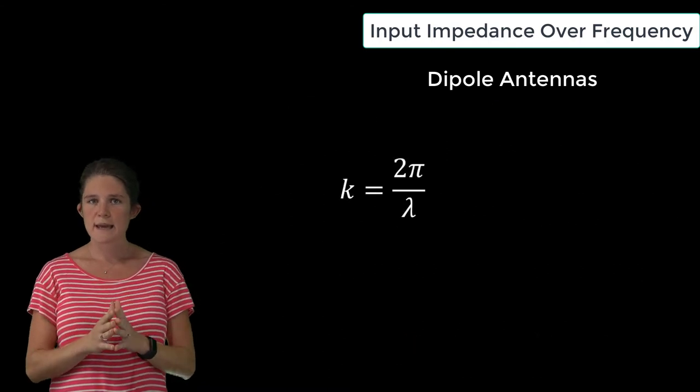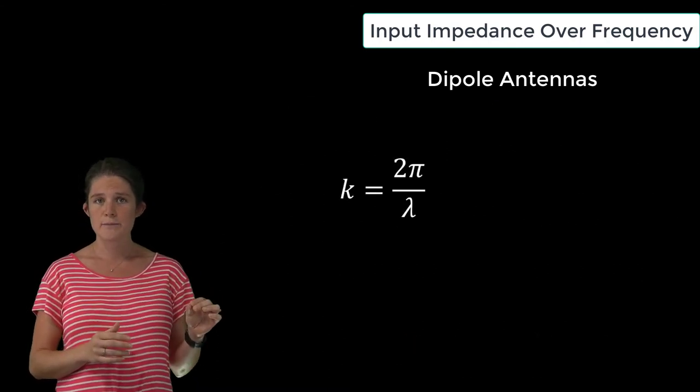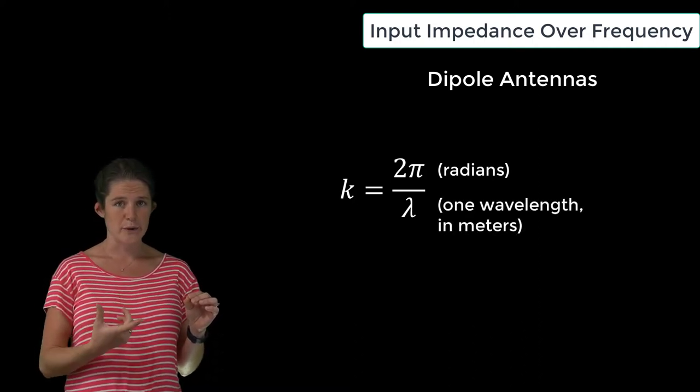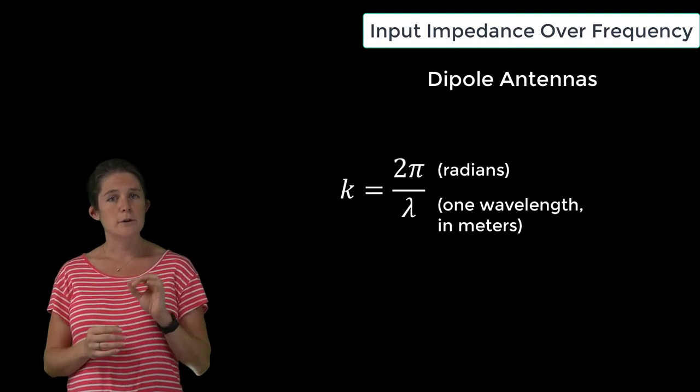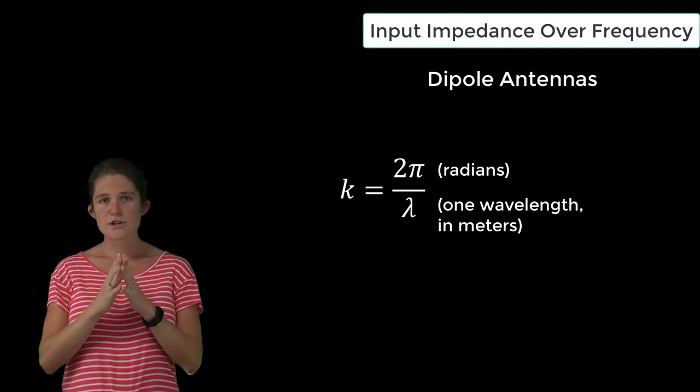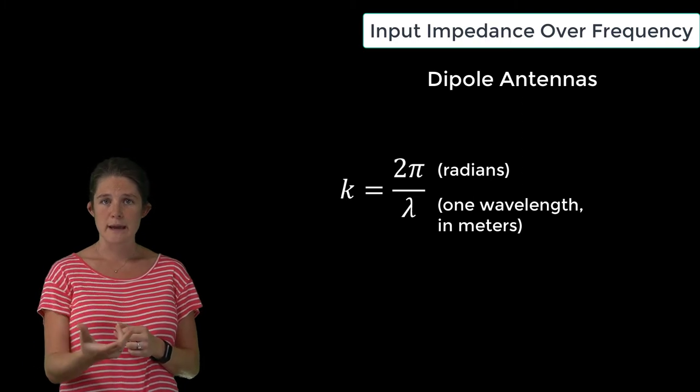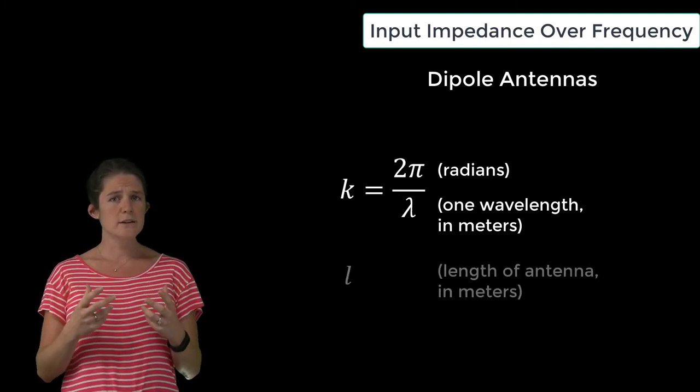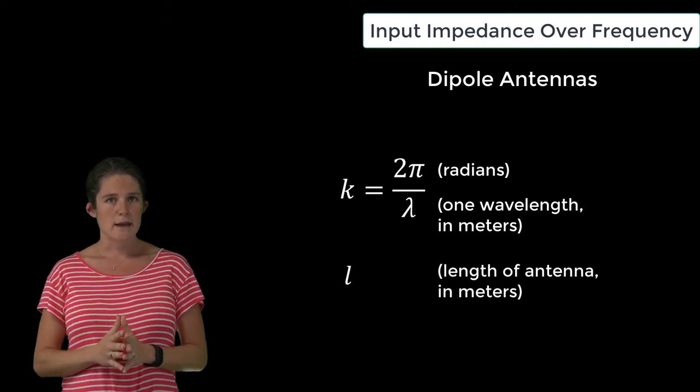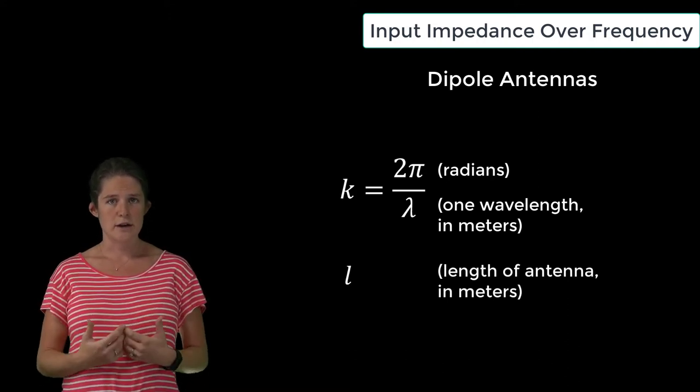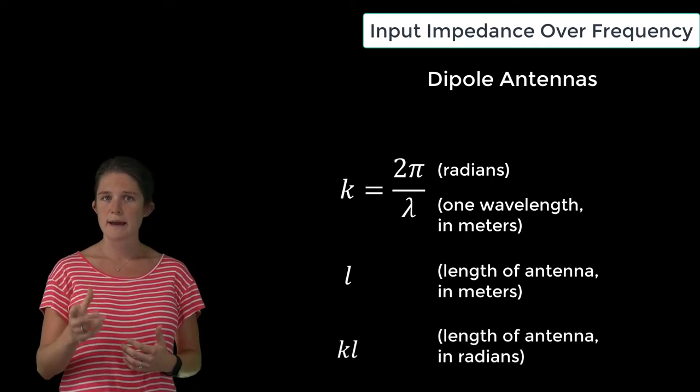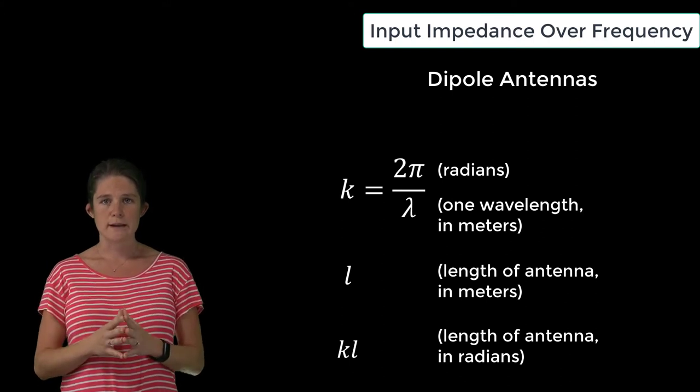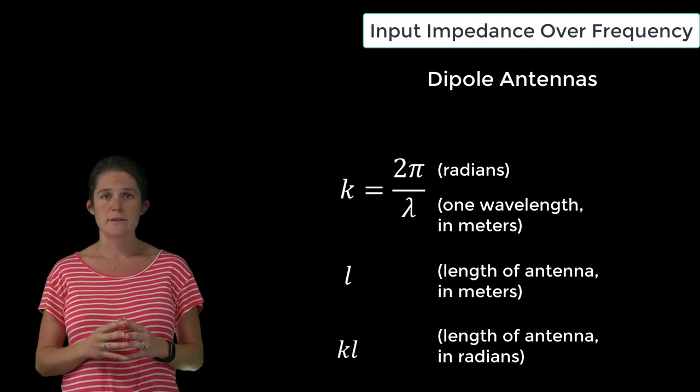Now, we said that k is equal to 2π, which is the number of radians in a wavelength, divided by λ, which is the wavelength. So you can think of k as a conversion factor. You aren't changing the value of l by multiplying by k, you're just changing the units. The physical length l is given in meters and obviously does not depend on the driving frequency. But the product kl, which is also a statement of antenna length, has units of radians and does depend on the driving frequency.